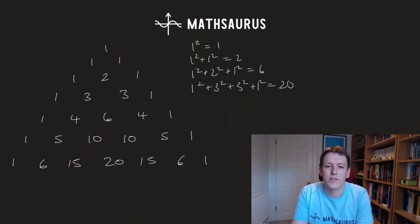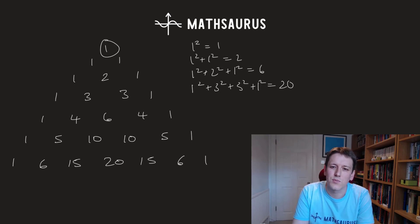So if you look at each row of Pascal's Triangle, square the entries and sum them up, something quite interesting happens. In the first row I get just 1 squared is 1 and I'm just going to circle this 1. Then 1 squared plus 1 squared is 2. Look I've got 2 here.